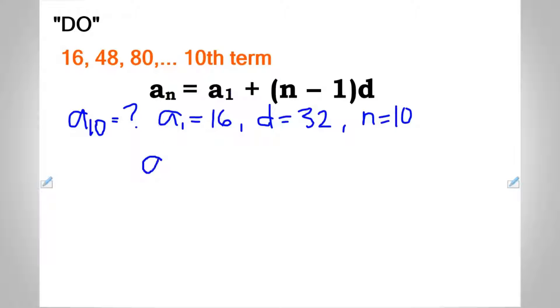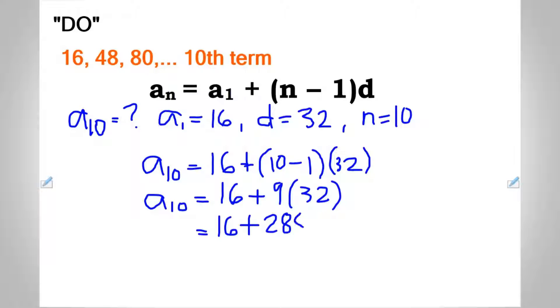We can now substitute it to the given formula. That will be a sub 10 is equal to 16 plus the quantity (10 minus 1) times 32. From that, a sub 10 is equal to 16 plus 9 times 32. As we know, 9 times 32 will give us 288. Adding 288 to 16, a sub 10 will now be equal to 304.